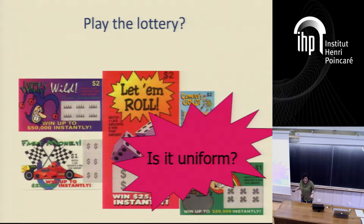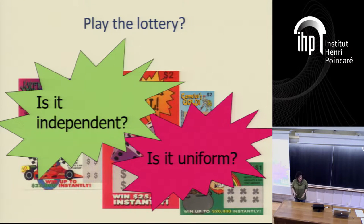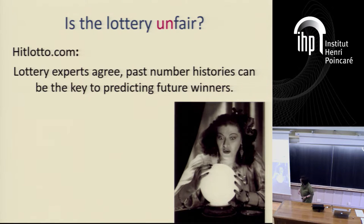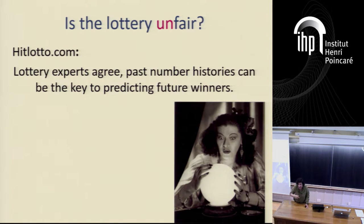First, you might want to know: it's supposed to be the uniform distribution, but is it really the uniform distribution? Secondly, you may want to know, are the draws from the lottery actually independent? How can you determine such a thing? Maybe the lottery is unfair. You could go on the web — there are all kinds of websites selling you past results of the lottery, on the idea that this would help you choose your next number to buy and have a higher chance of winning. So obviously some websites out there seem to think that the results are not independent.